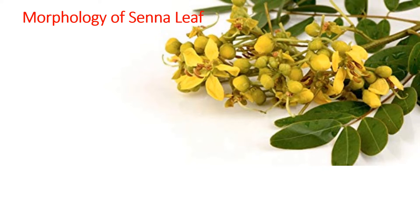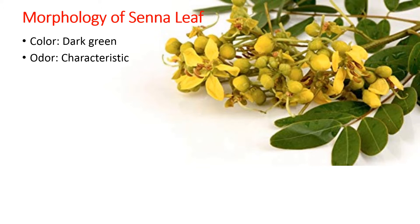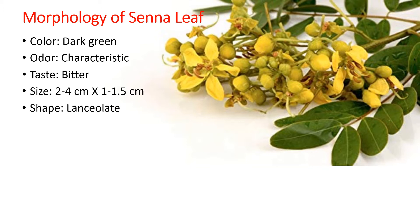As far as the morphology — the external appearance of the leaves — is concerned, these are dark green in color and they have a characteristic odor. It is not a pleasant odor and the taste is bitter. Size varies from 2 to 4 cm in length and 1 to 1.5 cm in width. Shape is lanceolate, meaning it is oval and tapered from both ends.